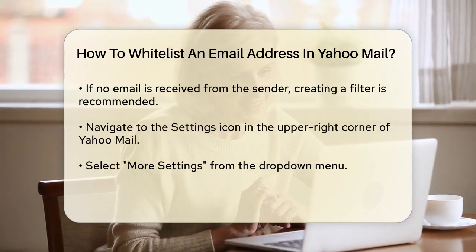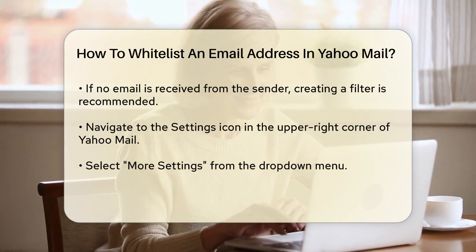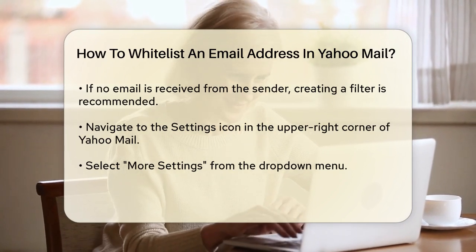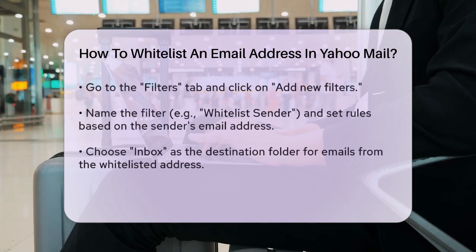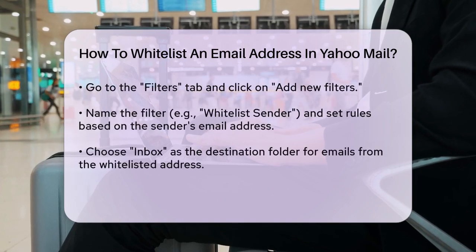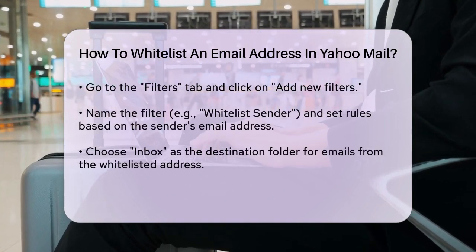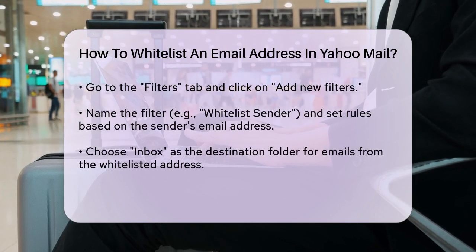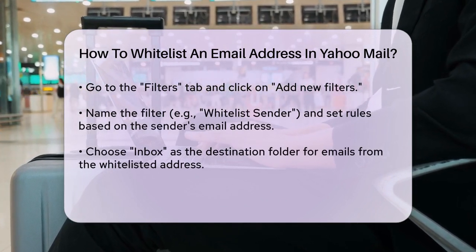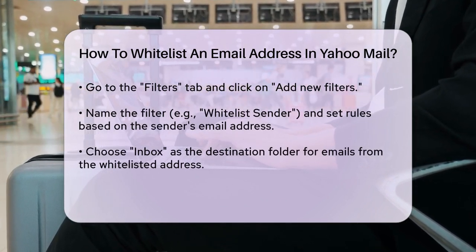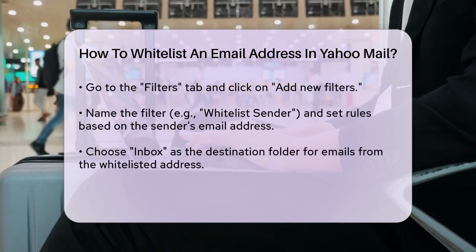Give your filter a name, something like Whitelist Sender, and then set the rules. Under Set Rules, choose From from the drop-down menu and enter the email address you want to whitelist. For example, if you want to whitelist emails from news@cubities.com, you would enter that address here.